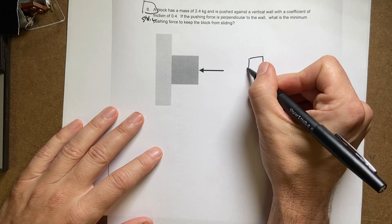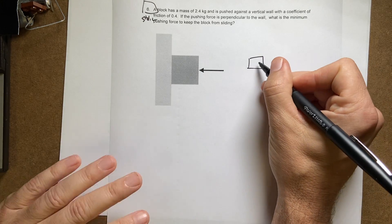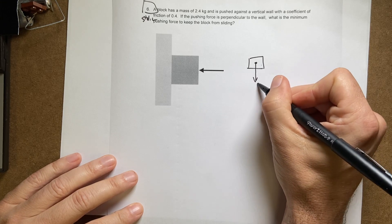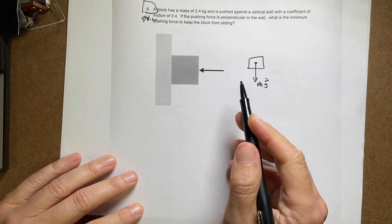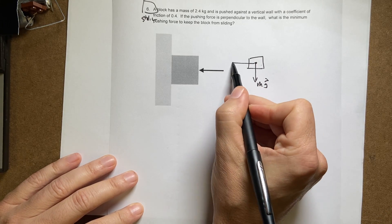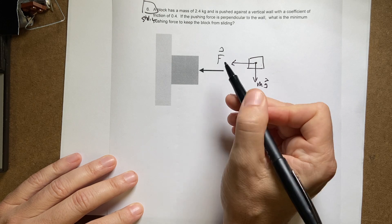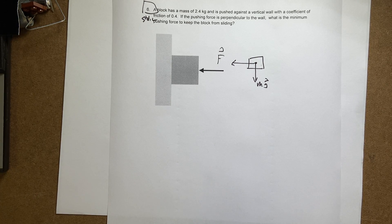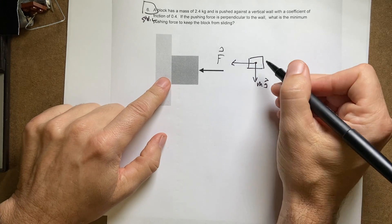So let's draw the block and what forces are acting on it. Well, I have the gravitational force. I know that. I have this other force right here, I'll just call that F. Now, if it's going to stay at rest in that position, then the net force has to be 0. So there has to be some other forces.